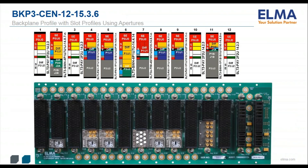The 3U 12-slot CMOS backplane shown here has seven of the 12 slots containing Vita 67.3 apertures, found in slots 2, 4, 5, 7, 8, 9, and 11. Slot 3 has a 67.3 D half-size aperture. Slots 4, 5, 7, 8, and 9 all have 67.3 C apertures. Slot 11 has a Vita 67.3 E aperture.